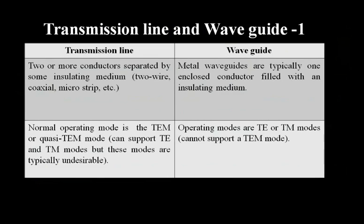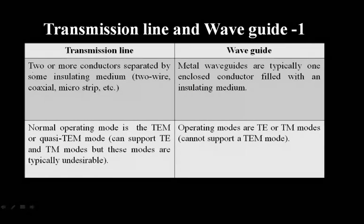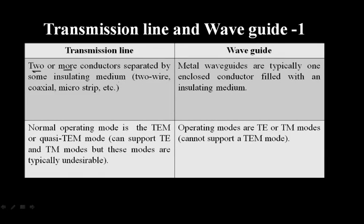Comparing transmission lines with waveguides: conventional transmission lines use two or more conductors separated by insulating material — such as two-wire cable, coaxial cable, and microstrip. Waveguides are metal structures with a single enclosed conductor filled with an insulating medium such as air. A normal transmission line supports TEM (transverse electromagnetic) mode, whereas a waveguide supports TE and TM modes.